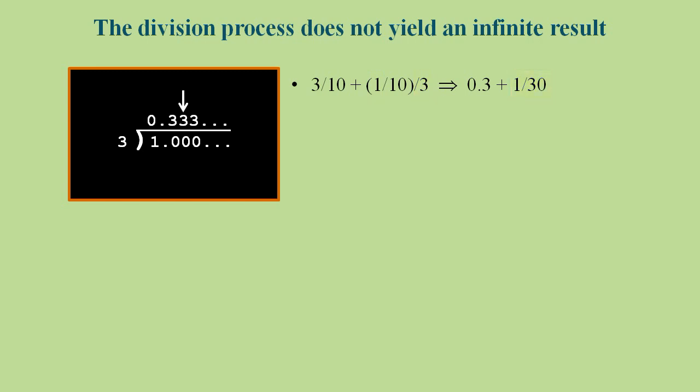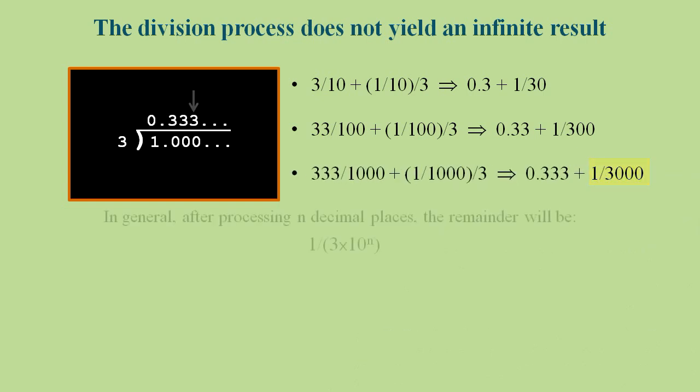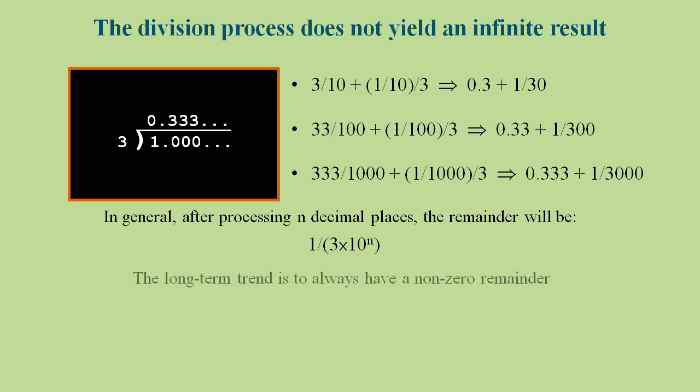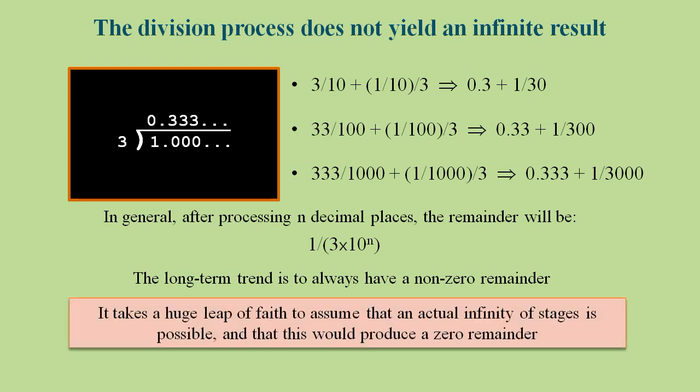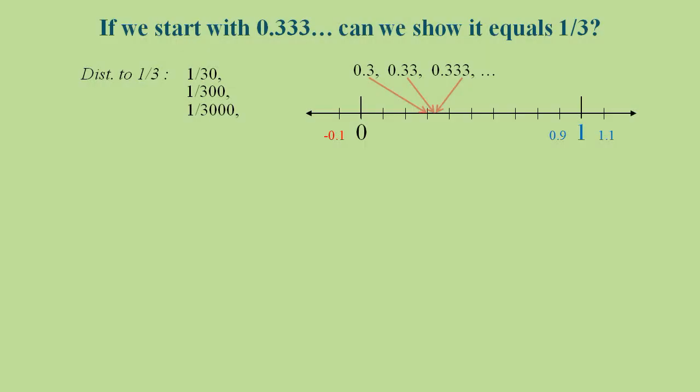After getting the second 3, there's a remainder of 1 three hundredth. After the third 3, a remainder of 1 three thousandth, and so on. And in general, after producing n decimal places, there is a remainder of 1 over 3 times 10 to the power n. So there will always be a non-zero remainder. The remainder can't go away. But as young children, we are duped into believing that an actual infinity of decimal places is theoretically possible, and that this supposedly makes the remainder disappear.